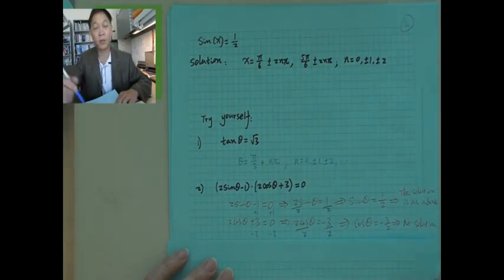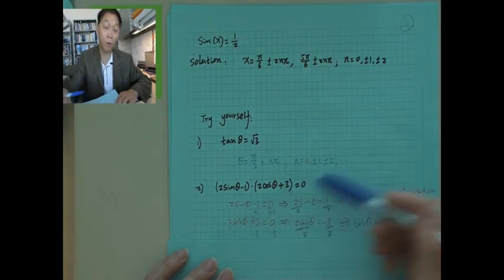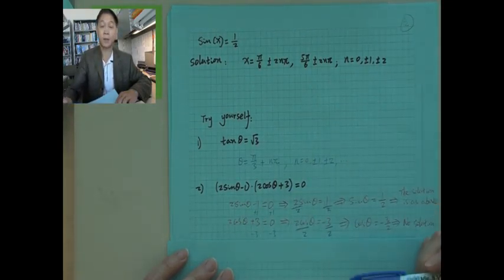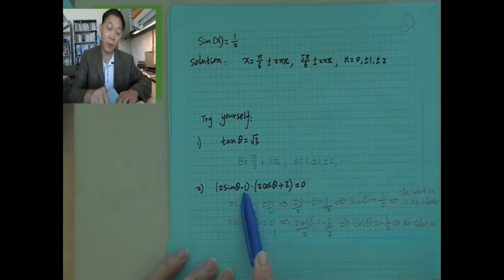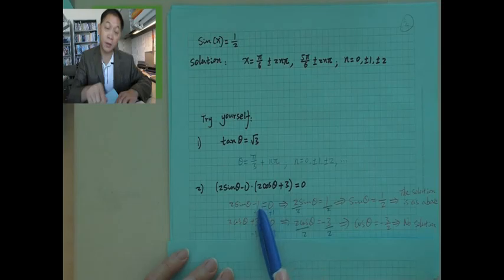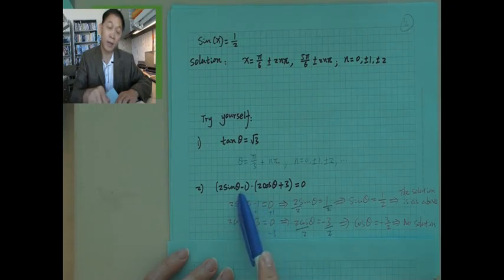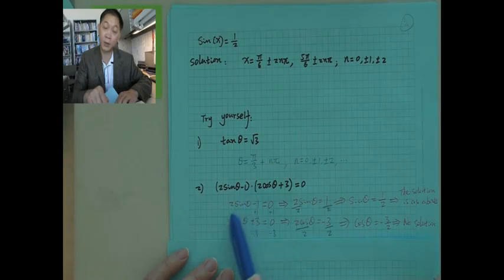From here, you want to try those on your own. How about changing negative 1 to negative radical 3? What do you get? You may choose positive or negative radical 3 and think more about that.